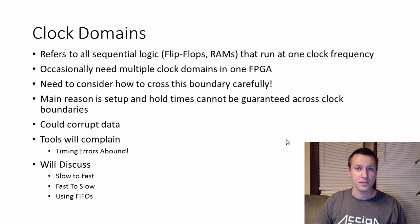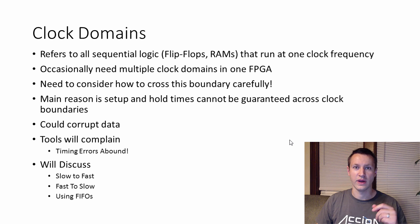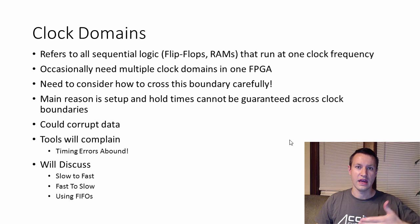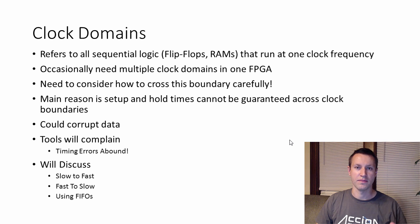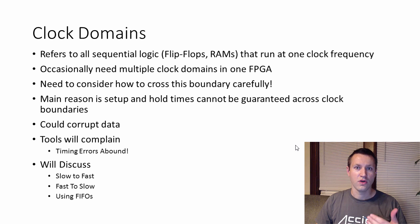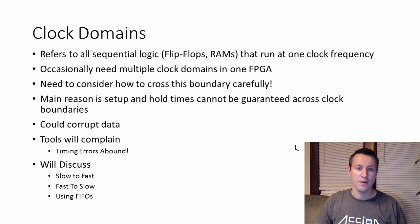Occasionally you might need multiple clock domains inside of one FPGA. Maybe you run your main logic at 78 megahertz but you have an SDRAM interface that runs at 200 megahertz, and you need to send data from your main clock to the SDRAM — some off-chip memory. You need to be very careful with how you cross clock domain boundaries, because setup and hold times cannot be guaranteed across clock boundaries.